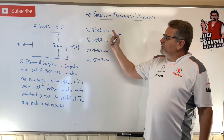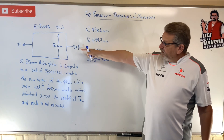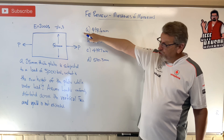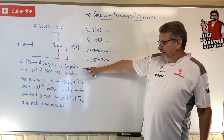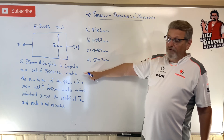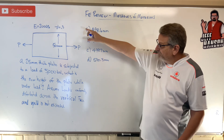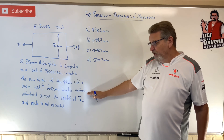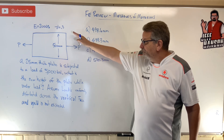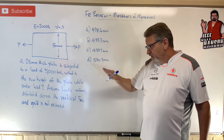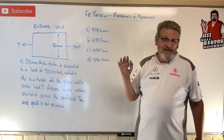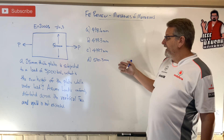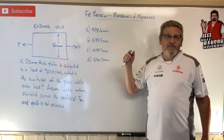Welcome back — FE review problems, mechanics of materials. We've got a rectangular plate. We're given the modulus of elasticity and Poisson's ratio. A 25-millimeter thick plate is subjected to a load of 5,000 kilonewtons. What is the new height of the plate? It started out at 500 — what's the new height while under load? Assume the loading is uniform across that full face, and the load is not to exceed yield, meaning we're operating in the elastic region. Here are your possible answers — press pause, work it out, then come back.